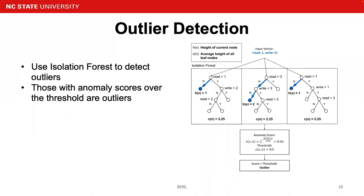For online detection, we use the isolation forest. Isolation forest is similar to a random forest and consists of many isolation trees. With an input vector, each isolation tree is able to find the final node for that input vector. We use the height of the node and the average height of leaf nodes to calculate the anomaly scores, and then we compare the anomaly score with the threshold. In this example, because the anomaly score of 0.66 is greater than the threshold, this input vector is an outlier.